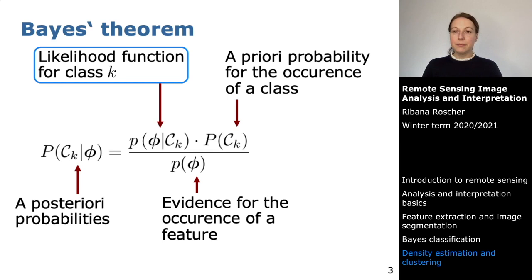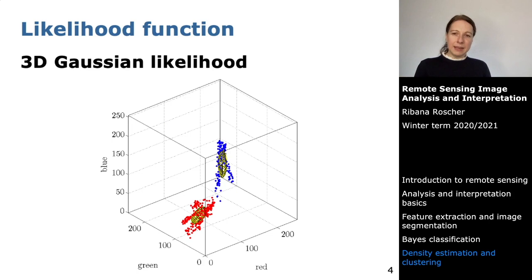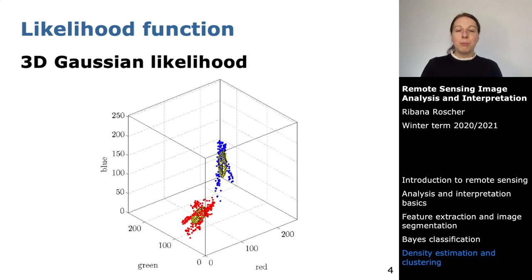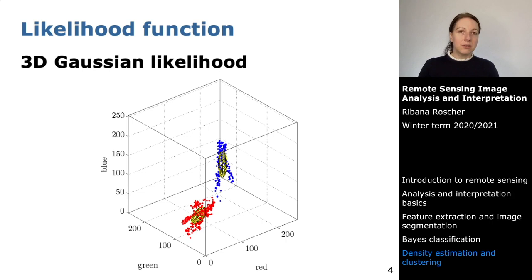The parameters describing the distribution are determined from the training data for each class. As illustrated before, we have three features — red, green, and blue — in feature space. The red points indicate where agricultural area features lie, and the blue points show where desert features lie. Because we assume a Gaussian distribution, we use yellow ellipsoids as the one-sigma iso-surfaces of the Gaussian distribution to illustrate how the data is distributed.